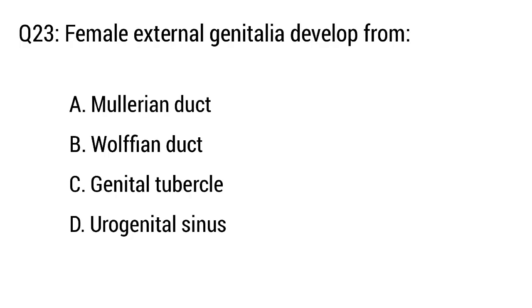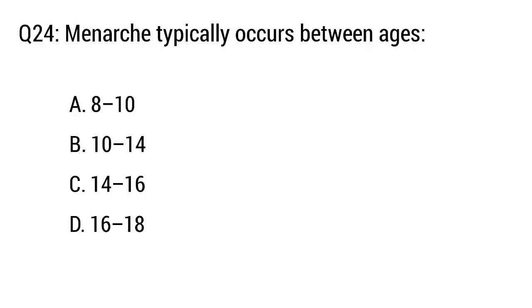Question number 23. Female external genitalia develop from — the right option is option C: Genital tuberculosis.